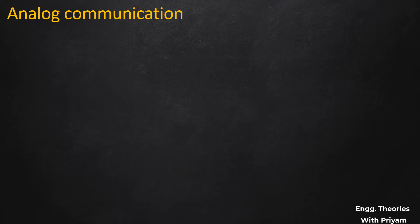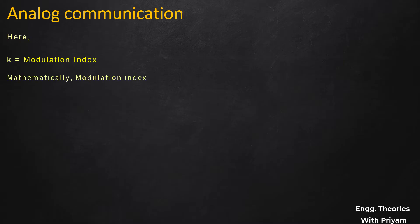Here k is the modulation index, defined as the level of modulation which a carrier signal undergoes. Mathematically, modulation index k = Am/Ac. This is Equation 2.